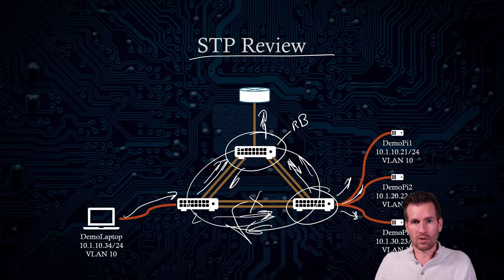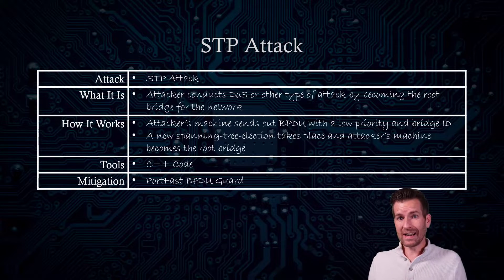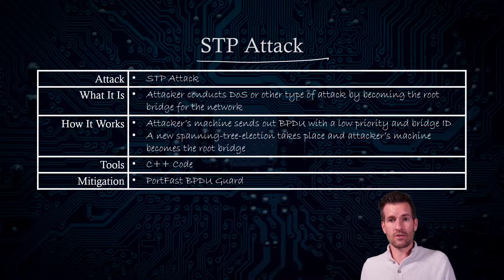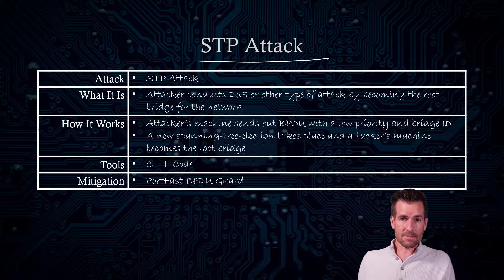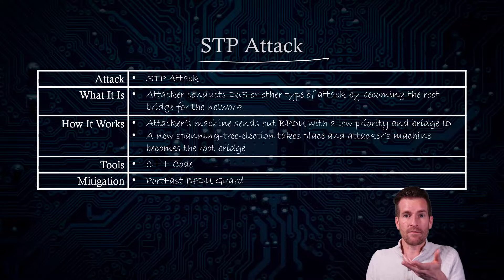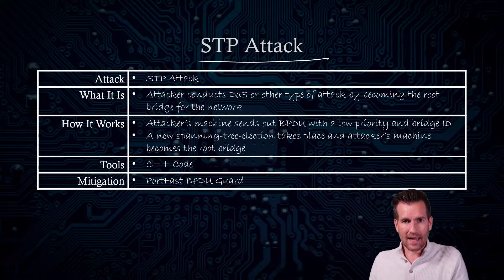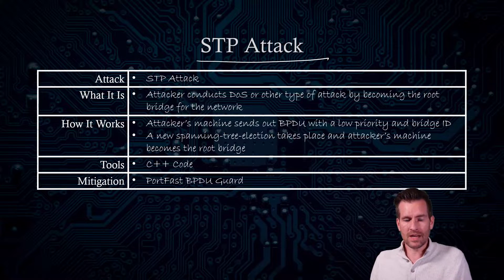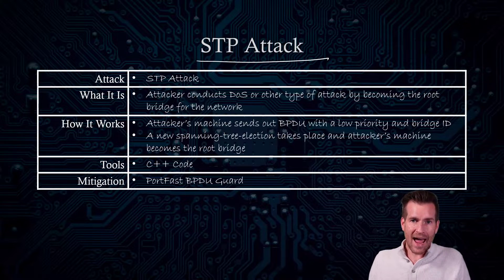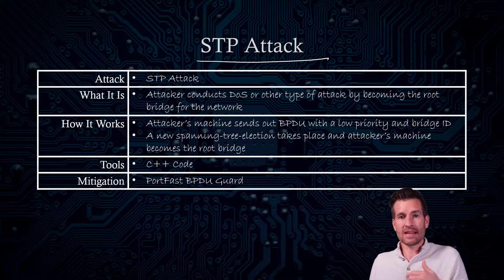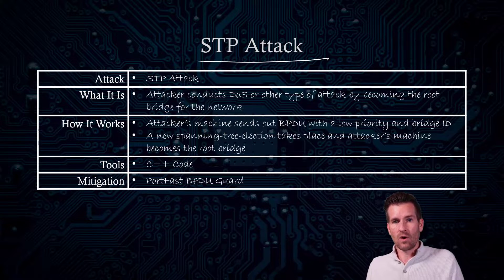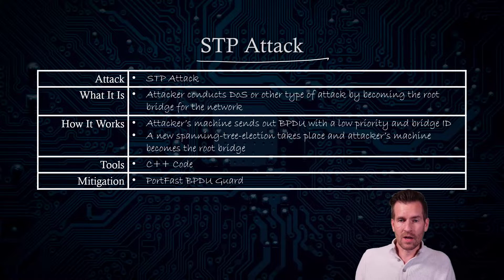The problem with Spanning Tree Protocol is it does have some vulnerabilities. An attacker can carry out an STP attack by connecting to a port that accepts bridge protocol data units — the communication used to figure out who the root bridge is. The attacker can send BPDUs with a very low priority and a low MAC address to guarantee itself that it will become the root bridge. All other devices will then recalculate their path toward the attacker, who can leverage this for a denial of service attack or other types of attacks. This is a little tricky to carry out, but it can be done.